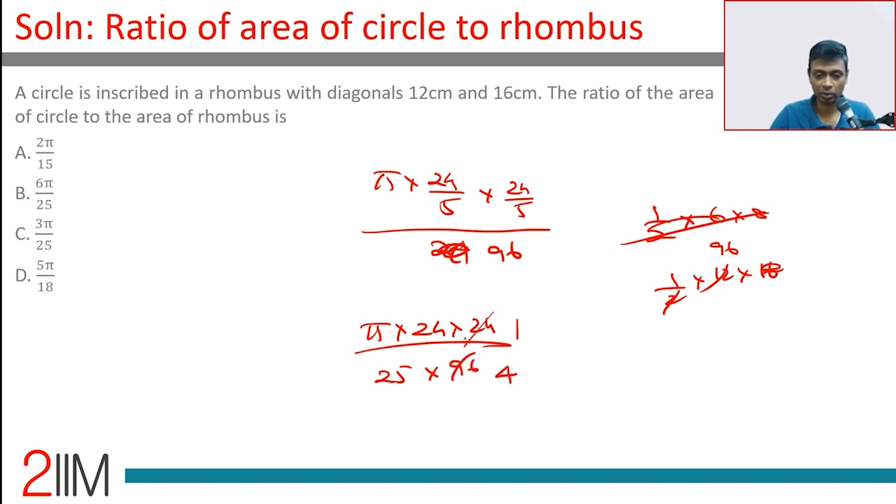24 by 96 is 1 by 4, 24 by 4 is 6. The answer is 6 pi by 25. Lovely. My original answer would have given us 24 pi by 25, which luckily enough was not there in the choices. The formula is half into product of diagonals, not half into product of half the diagonals.